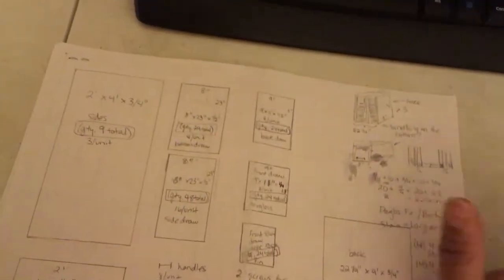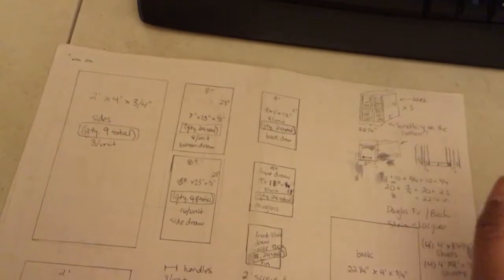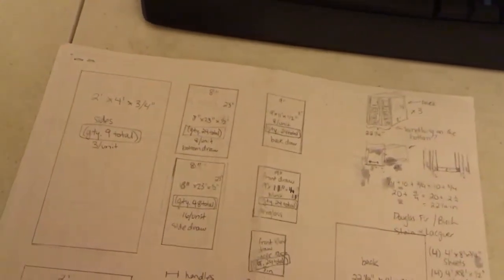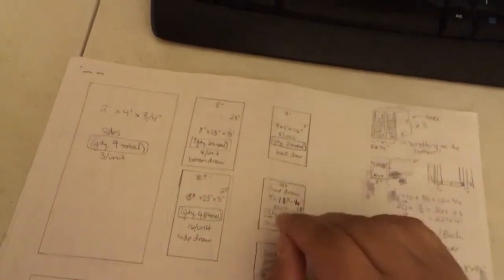Now we're going to move on to the drawers. The drawers were half an inch pieces because they're not really used as much for support. They're only really holding the comic books. And so I have a little more leeway room with the thickness of the wood.